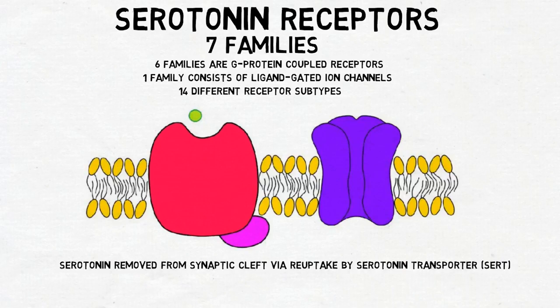In terms of function, serotonin is often linked to mood, in part due to the understanding that many antidepressants cause serotonin levels to rise. However, an attempt to define any neurotransmitter by one function is inevitably an oversimplification. In truth, serotonin's role in mood is very complex, and depression is not likely to be due to a simple serotonin deficiency. Additionally, serotonin is involved in a long list of functions other than mood, and in most cases its actual role in these functions is still not completely understood.